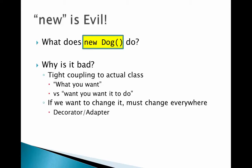Let's say we wanted to decorate or adapt this — we're going to talk about those patterns next month. If we want to tweak the behavior of the Dog, or change it to look like a Dog, we have to actually change the `new` for every place. If we wanted to create an instance of a subclass, like a FluffyDog, we'd have to again go to every place and change it. It kind of locks us down.